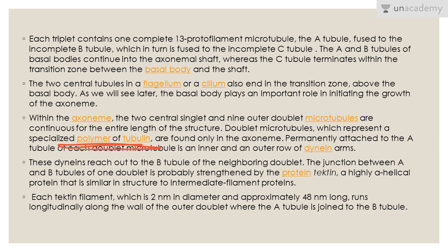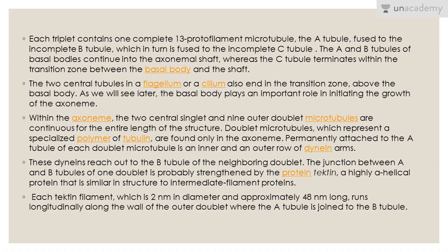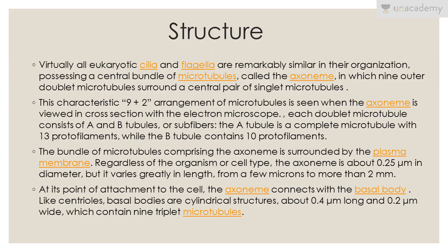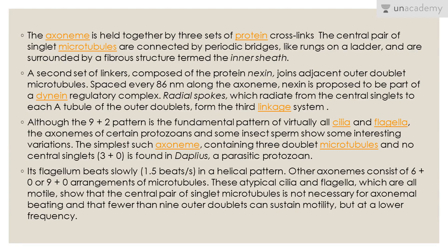Attached to the A tubule of each doublet microtubule is an inner and outer row of dynein arms. These dynein arms reach out to the B tubule of the neighboring doublet. The junction between A and B of one doublet is probably strengthened by a protein termed tectin, a highly alpha-helical protein similar in structure to intermediate filament proteins. Each tectin filament is 2 nanometers in diameter and approximately 48 nanometers long, running longitudinally along the wall where the A tubule is joined to the B tubule.